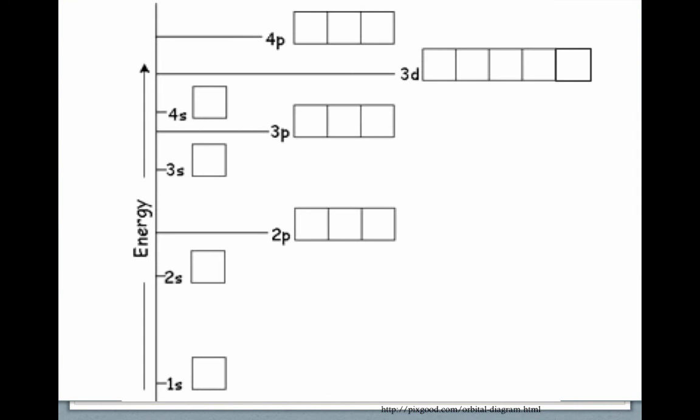Now that we know the rules, let's practice drawing some orbital diagrams. Here's a template to help. Let's start with carbon, which has six electrons. I'll put two in the 1s orbital, then two in the 2s orbital — that's four. The two remaining electrons go one each into the first two orbitals of the 2p sublevel, both pointing in the same direction. From here, the electron configuration would be 1s2, 2s2, 2p2.